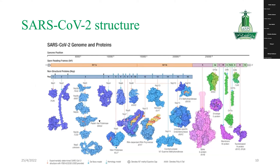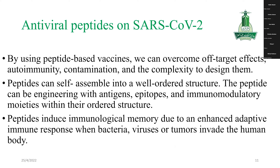Briefly about the structure of SARS-CoV-2: it contains many sites, and these regions can be targeted using specific peptides that are complementary to a specific region. We can then inhibit its assembly or growth of the virus. For example, many people target the spike S protein region, and there are also many other regions that can be targeted.